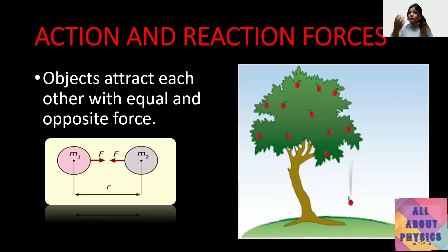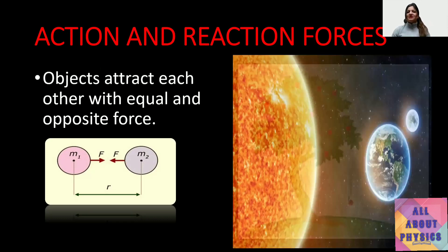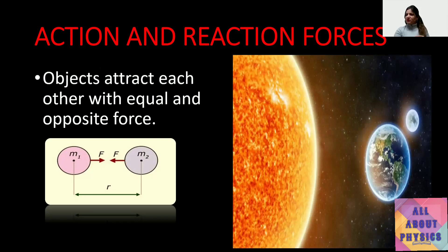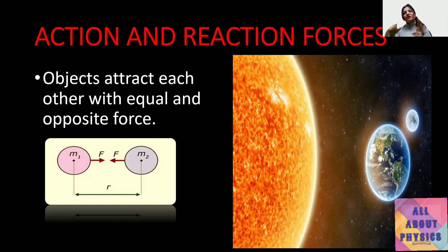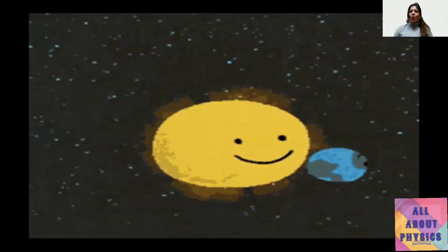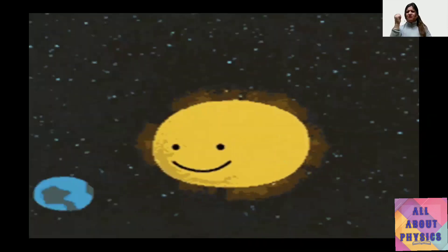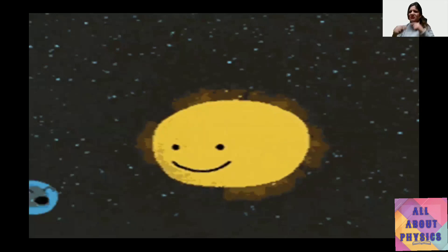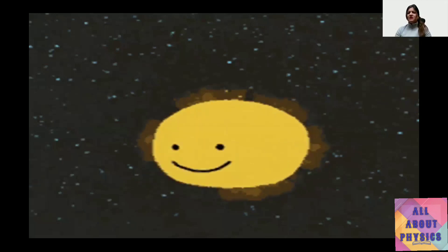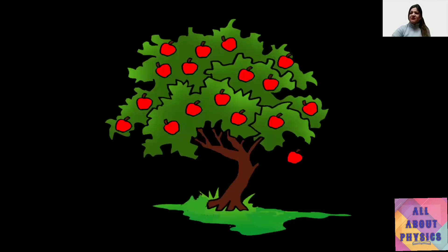The apple falls because Earth exerts force on it, so the apple also exerts the same force back on the Earth. Similarly, Earth revolves around the Sun because they exert force on each other — the force with which the Sun attracts the Earth is the same force with which Earth attracts the Sun. Then why does only Earth revolve around the Sun, and why do we only see the apple falling toward Earth and not the Earth moving toward the apple?